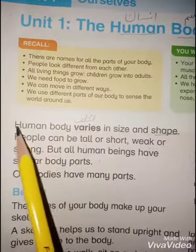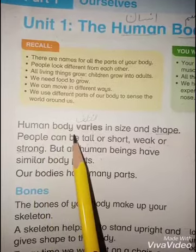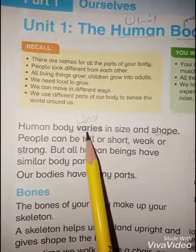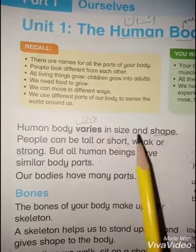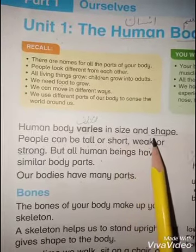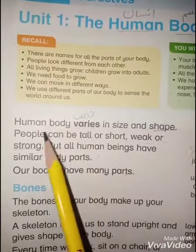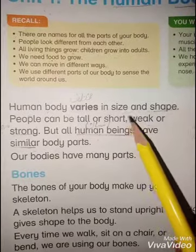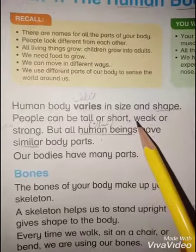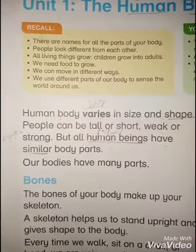Let's start our reading. Read with me. Human bodies vary — underline the word 'varies' and write the meaning: 'mukhtalif' (different). Bodies vary in size and shape. People can be tall or short — 'tall' means 'lamba' (long/tall) and 'short' means 'chota' (small).